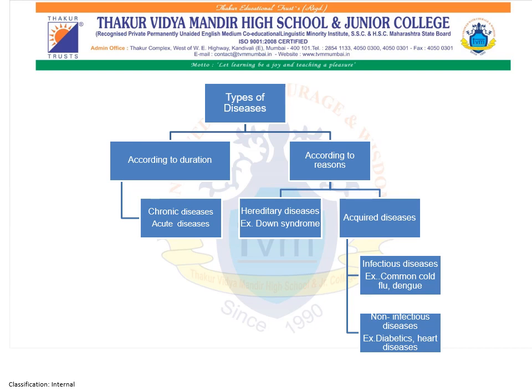You must have heard names of various diseases. Reasons and symptoms of these diseases are different. Now, to bring coordination and scientific study of diseases, diseases are classified as follows. Firstly, diseases are classified according to duration and according to reasons. According to duration, diseases are classified into chronic diseases and acute diseases.